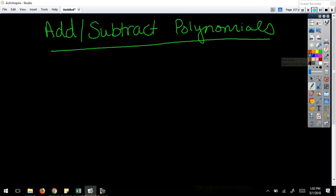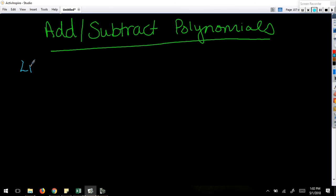You need to understand what like terms are in order to understand how to add or subtract polynomials. Like terms means that I have the same base and the same exponent. The number in front could be different.